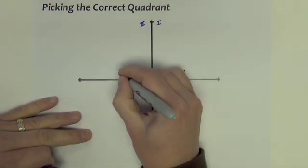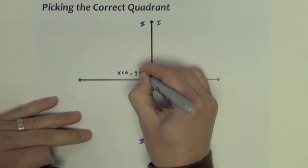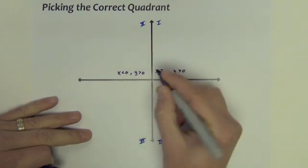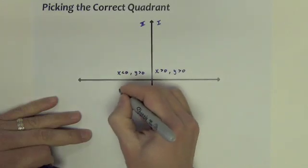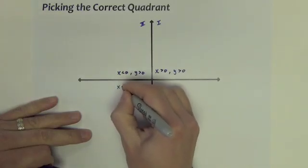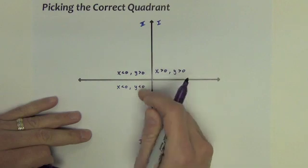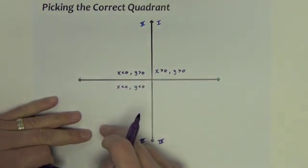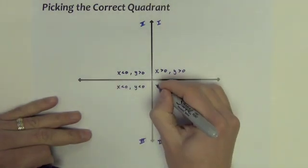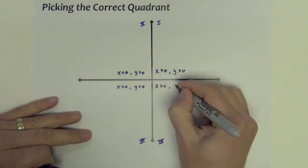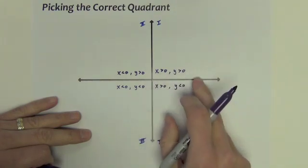In the second quadrant, x is less than zero and y is greater than zero — negative, positive. In quadrant 3, x is less than zero and y is less than zero — negative, negative. And in quadrant 4, x is greater than zero and y is less than zero — positive, negative.